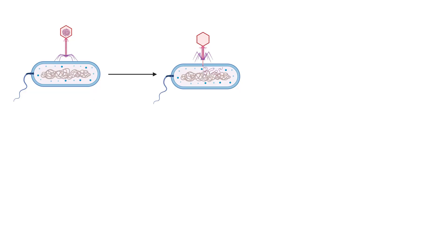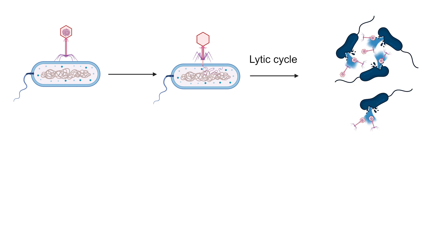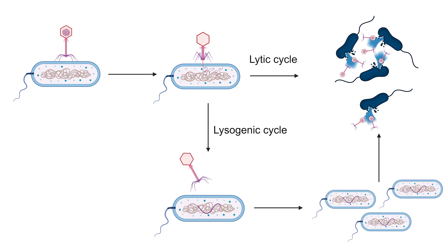A phage first infects a bacteria by injecting its pressurized genetic material into it. From there, the phage can enter the lytic cycle, where it uses the bacterial machinery to make and assemble new phages, roughly 20 to 100 per bacteria, then causes the bacteria to burst, or lyse, releasing new phages which go off and infect more bacteria. Alternatively, the phage can enter a state of dormancy called the lysogenic cycle, where it integrates its genome into the bacteria's genome. As the bacteria divides, it passes the phage DNA onto all its descendants, and when conditions are right, the phage can reactivate and switch to the lytic cycle.